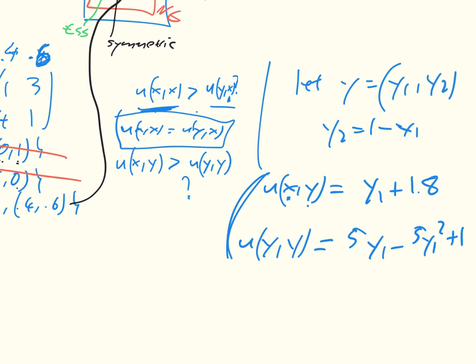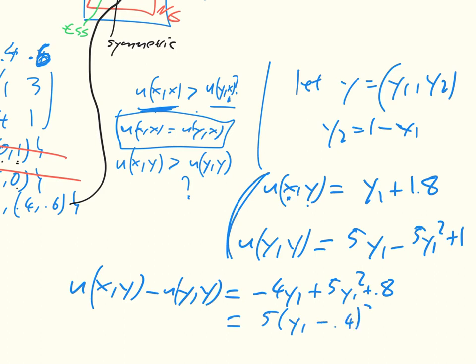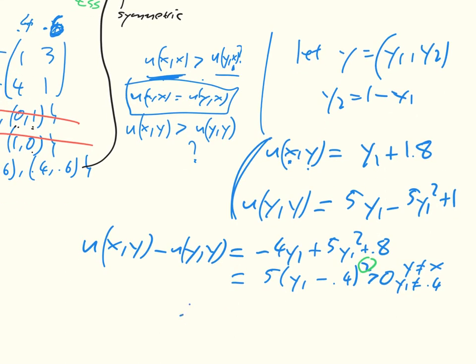where this is the row strategy and this is the column strategy. And then what we can look at is what is the difference of u of x,y minus u of y,y. And just do the math, we get minus 4y1 plus 5y1 squared plus 0.8, which we can factorize as being equal to 5(y1 minus 0.4) squared. But because we're starting out with the assumption that y is different to x, we know that y1 is different to 0.4. So in fact, that is always greater than 0. And so we can conclude by saying, thus, x equals (0.4, 0.6) is an ESS and will be resistant to invasion.